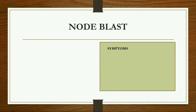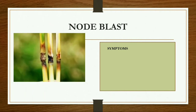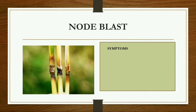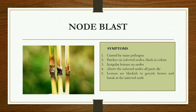Coming to node blast in rice: you can observe the symptoms at the nodes. It is caused by the same pathogen. The patches on infected nodes are black in color. The irregular lesions on the nodes are blackish to grayish-brown, and all parts above the infected nodes die, causing the stem to break at the infected node.